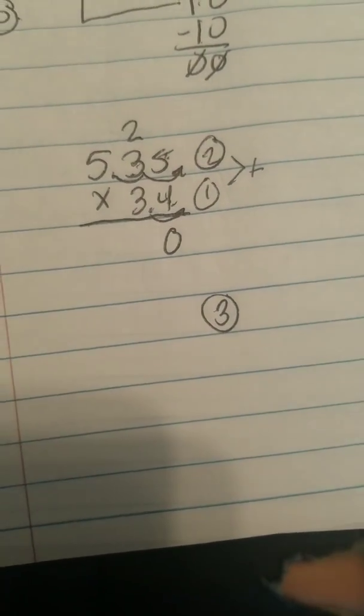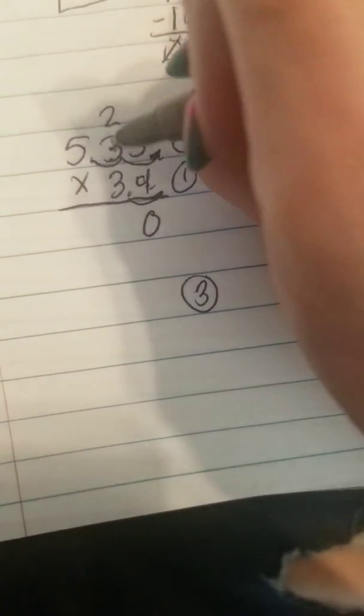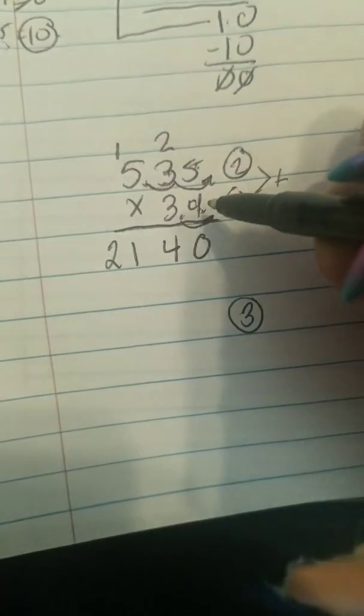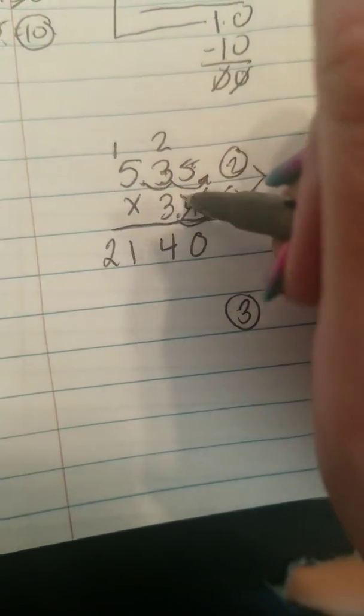4 times 5 is 20. Put a 2 up top and the 0 down below. 4 times 3 is 12 plus 2 is 14. So I'm going to put a 4 down below and carry a 1. 4 times 5 is 20 plus 1 is 21. Because I am done with this 4, I'm going to mark it out.